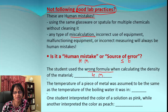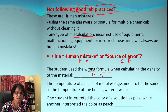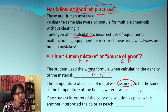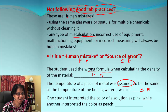Second: the temperature of a piece of metal was assumed to be the same as the temperature of the boiling water it was in. Since we didn't really measure it — it was an assumption — this is a source of error, not within our control. We could improve it by actually measuring the correct temperature.